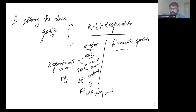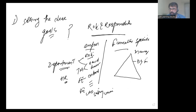When it comes to the function, you also need to consider the hierarchy. The hierarchy goes: Manager, then Deputy Manager, then Assistant Manager, then Senior Officer, and at the bottom, Executive — each level having its own defined roles.